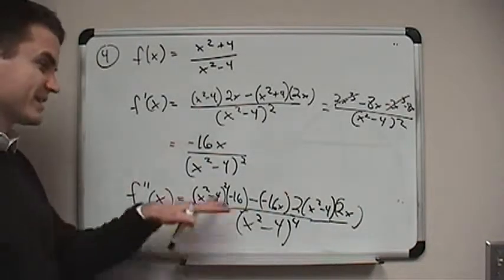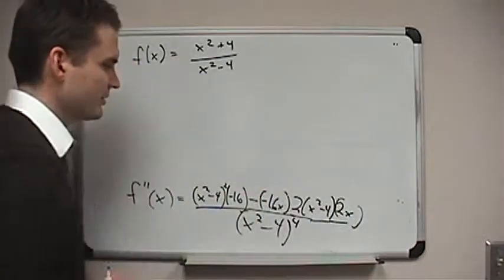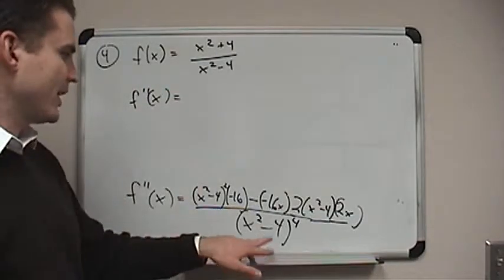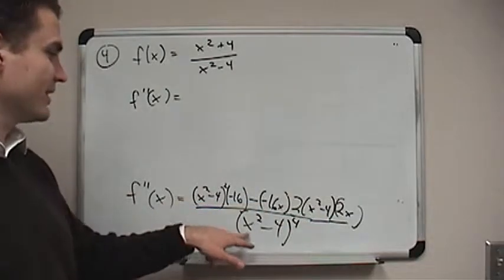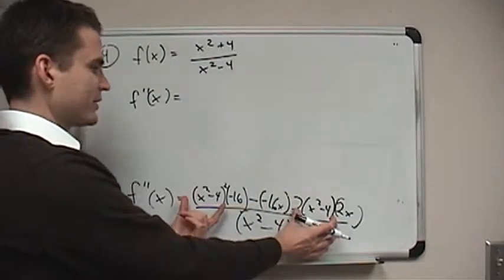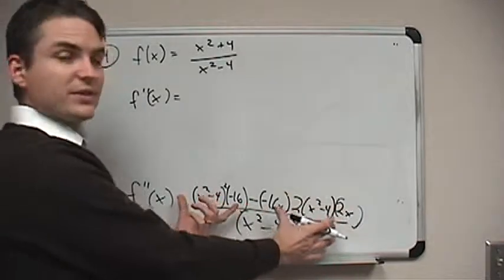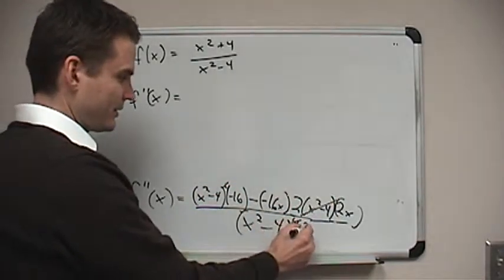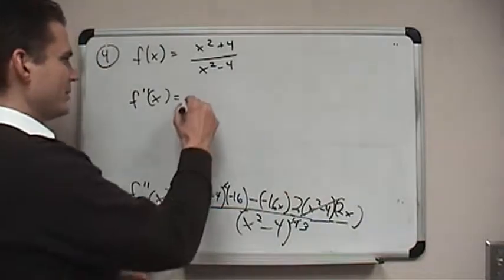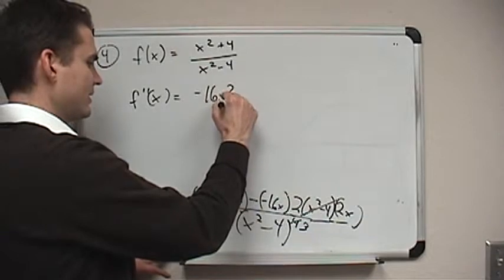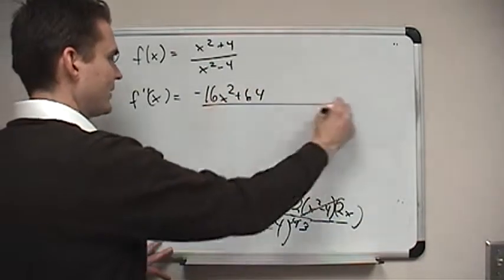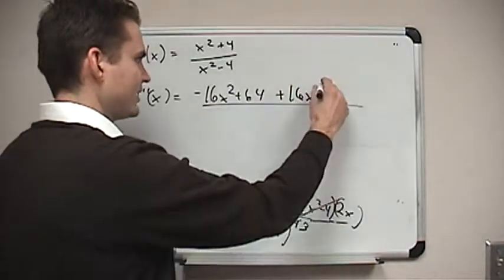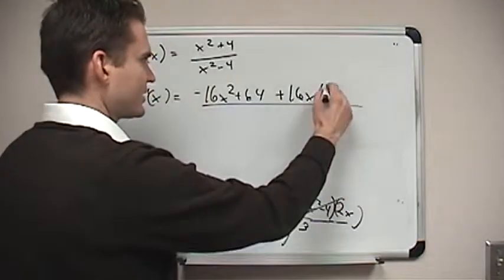It's going to take a little bit because this is a pretty complicated second derivative, but we can go ahead and simplify it. What you'll notice is that we've got (x squared minus 4) as factors in the numerator and as a factor in the denominator. So I can factor one (x squared minus 4) out of each of the two terms in the numerator, cancel that with one in the denominator. What we'll end up with is negative 16x squared plus 64, plus 16x times 4x.